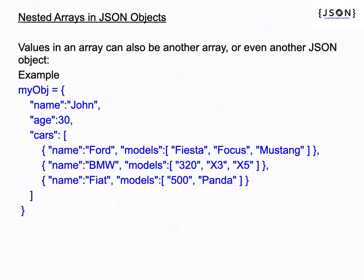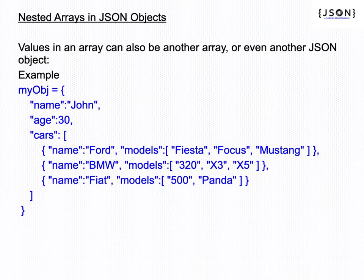Another JSON object is also defined as array elements. This is how nested elements and JSON objects are considered as values in JSON object creation.